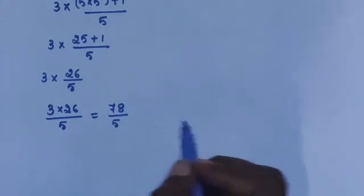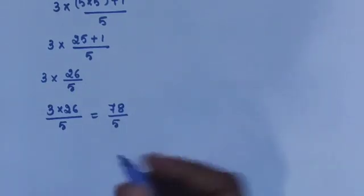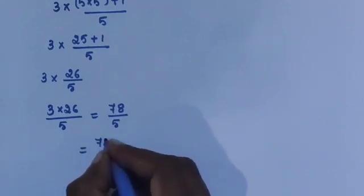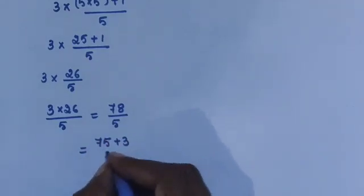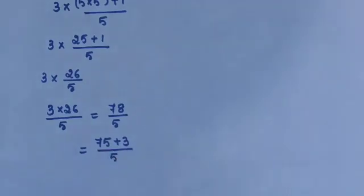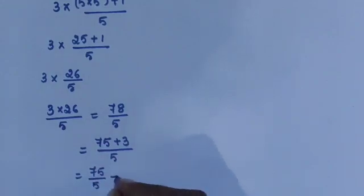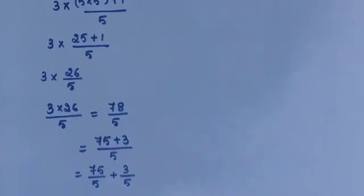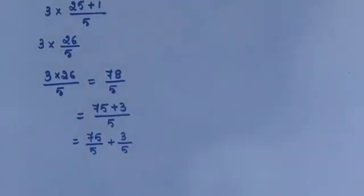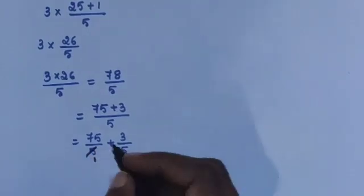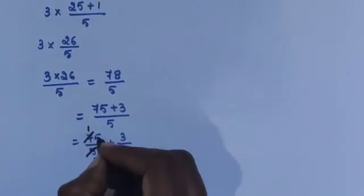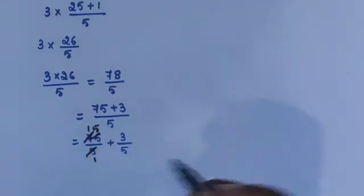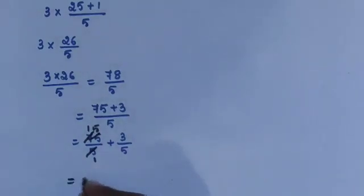Convert 78/5 into a mixed fraction. 78 = 75 + 3, so 75/5 + 3/5. Since 75 ÷ 5 = 15, the final answer is 15³/₅.